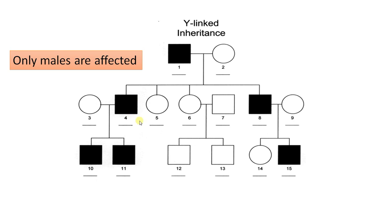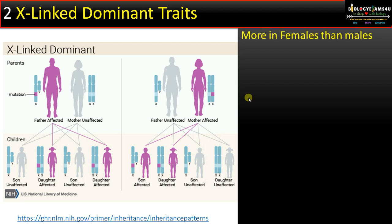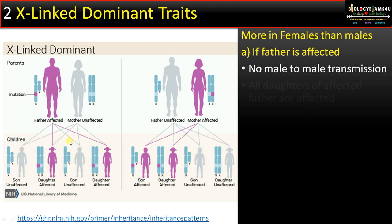Moving to the second pattern: X-linked dominant traits are more common in females than males since there are two X chromosomes in females. In case one, if the father is affected, he passes the affected X chromosome to all daughters, so as it is a dominant trait, all daughters will be affected.